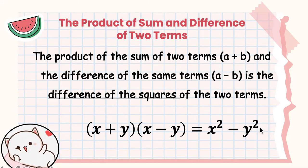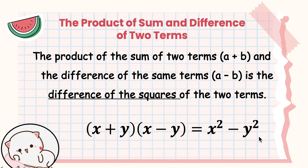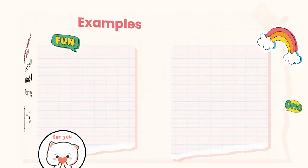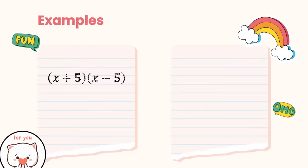The product will be the difference of two squares. Let us have some examples. Number one: what is the product of (x + 5) and (x − 5)?